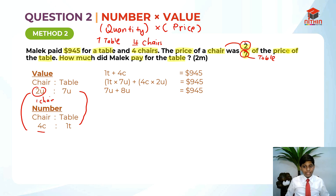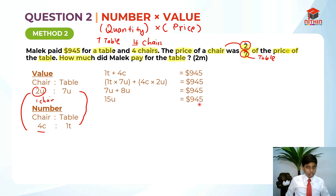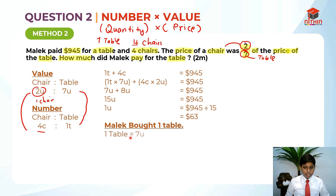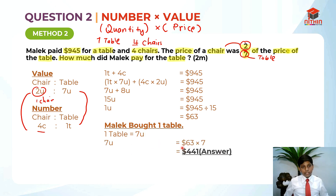Pretty much from now it's the same as the first method. 7 units plus 8 units is 15 units, equal to $945. Always find 1 unit: $945 divided by 15, which is equal to $63. Malik only bought 1 table, and 1 table is equal to 7 units. So we just need to find 7 units: $63 times 7, which is equal to $441. And this is the answer.